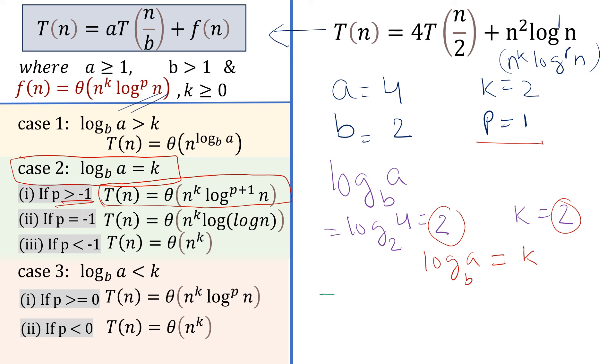Putting the value in this: T(n) equals θ(n^k log^(p+1) n). What is k? k is 2. What is p? p is 1. So what will be our final answer? It will be n² log² n. This is our final answer.